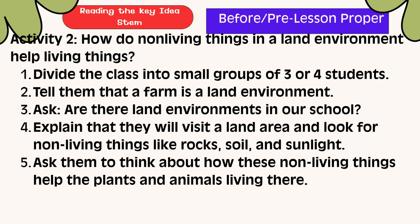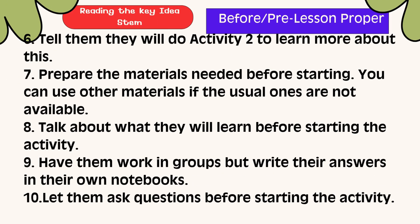How do non-living things in a land environment help living things? Number 1: Divide the class into small groups. Number 2: Tell them that a farm is a land environment. Number 3: Ask, are there land environments in our school? Number 4: Explain that they will visit a land area and look for non-living things like rocks, soil, and sunlight. Number 5: Ask them to think about how these non-living things help the plants and animals living there. Number 6: Tell them they will do activity 2 to learn more about this.